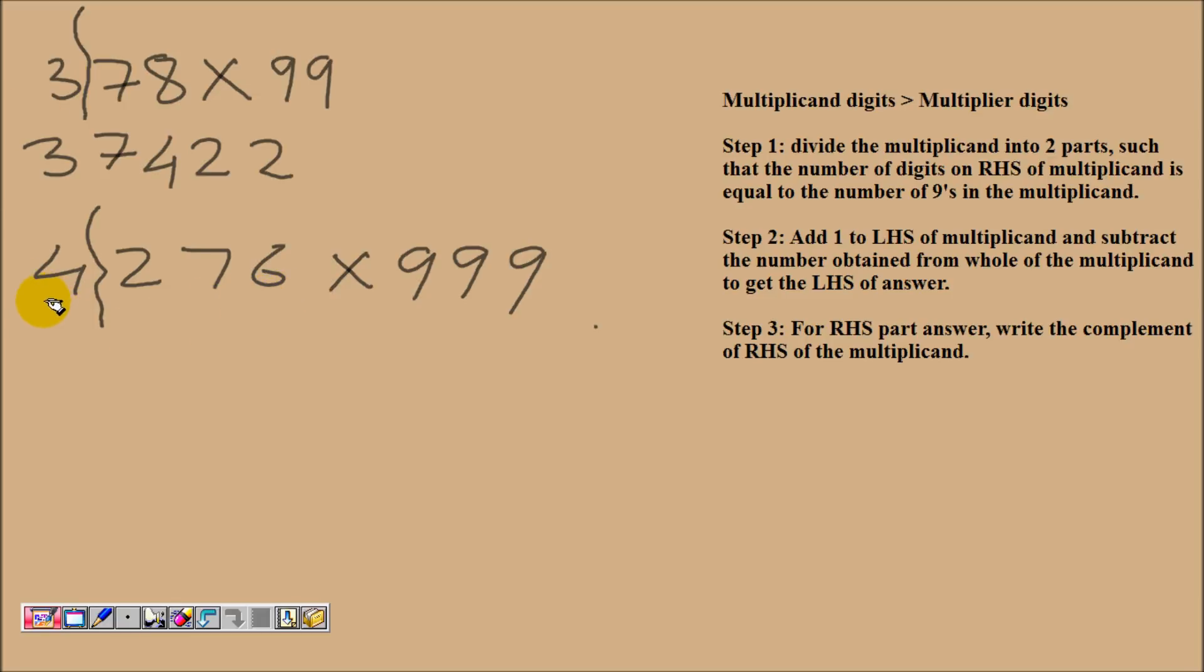Now we will add 1 to this 4, so 4 will become 5. And then we will subtract this 5 from this whole number, so this will become 4271. Now we move to the third step to find the RHS part of the answer. We will be finding the complement of 276. Since 276 is a 3-digit number, we will subtract this from 1000. So on subtracting 276 from 1000, you will get 724.